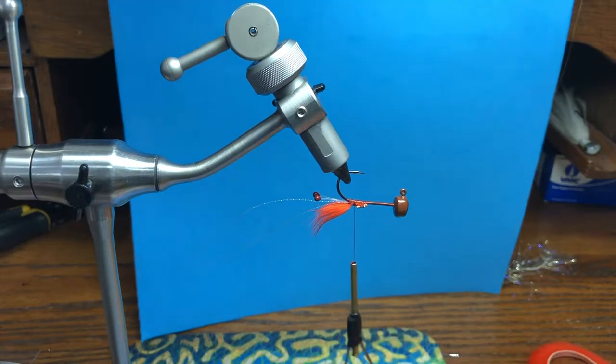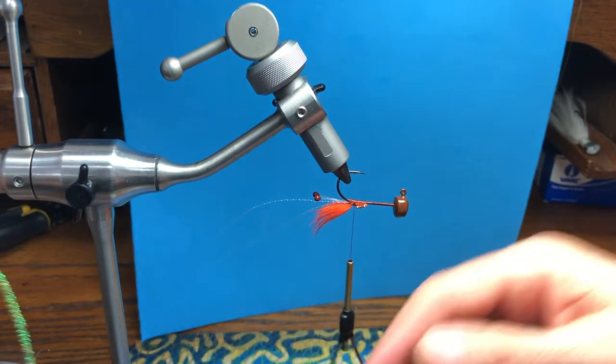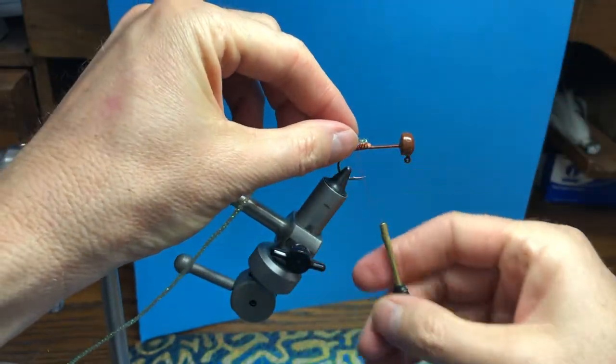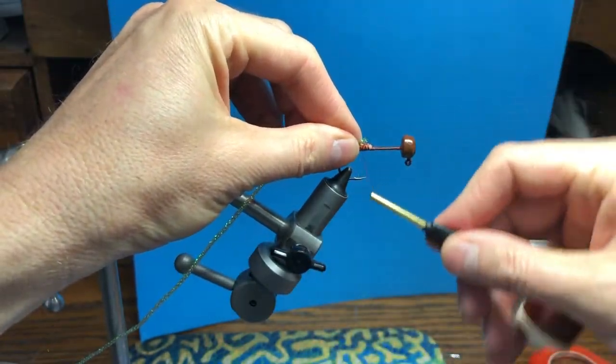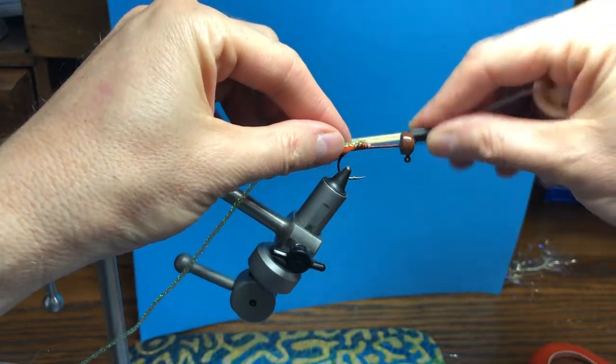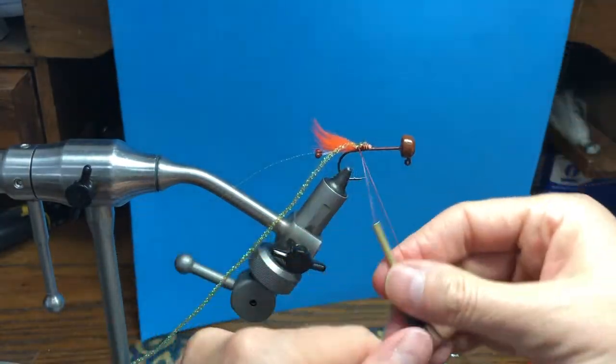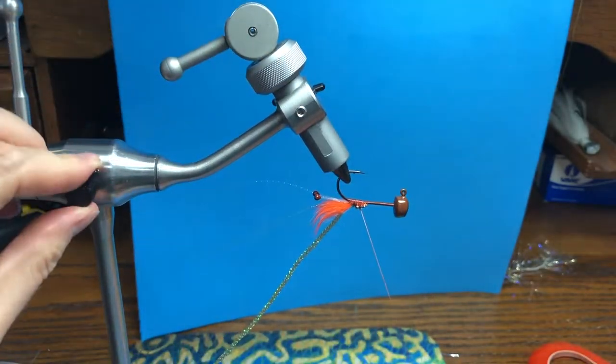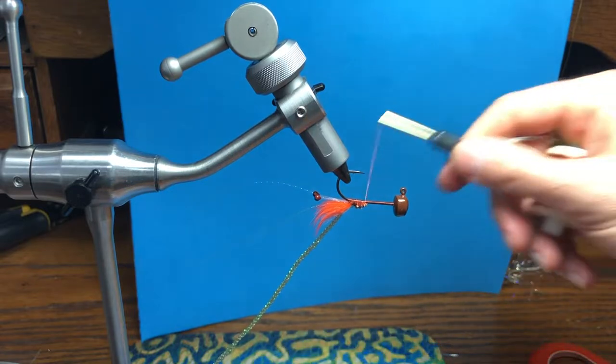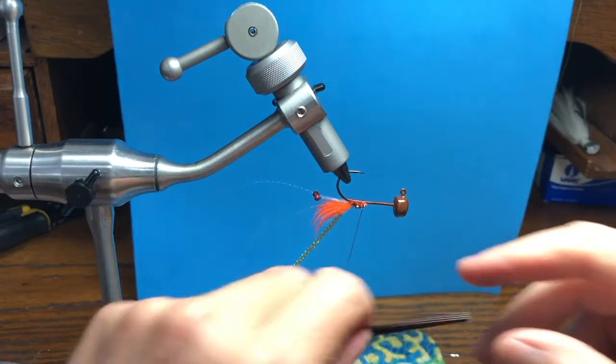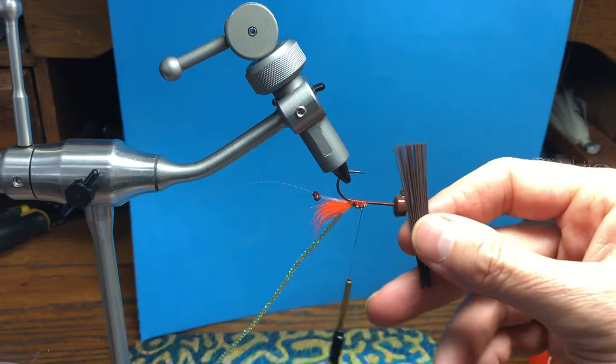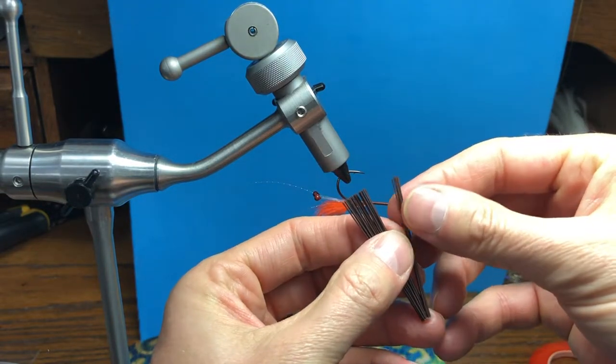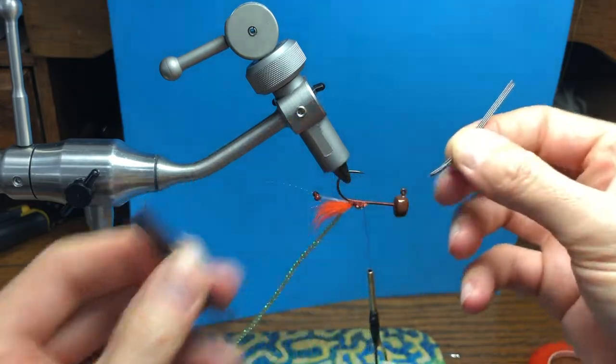Now we're gonna tie in diamond braid in bonefish tan. Tie it in right there along the end and leave a long tag. Next we're gonna tie in the weed guard pieces - it's a long fiber guard that you would use on a bass jig. Pull off four strands.